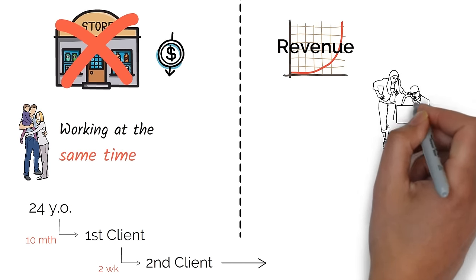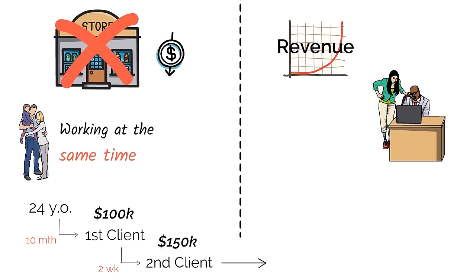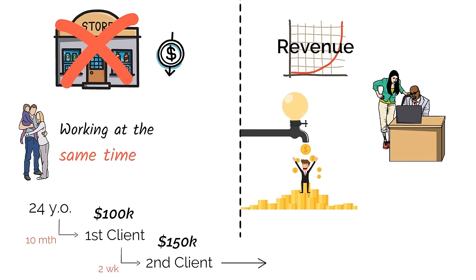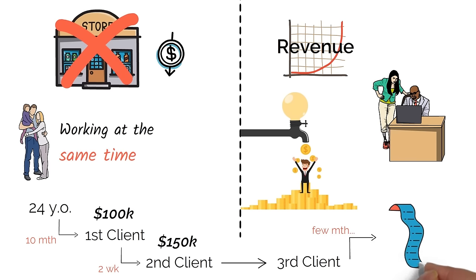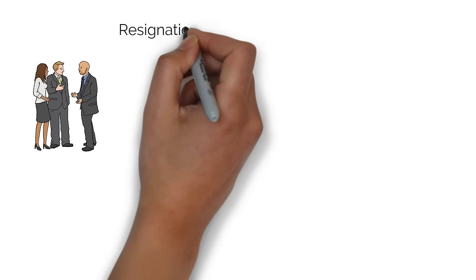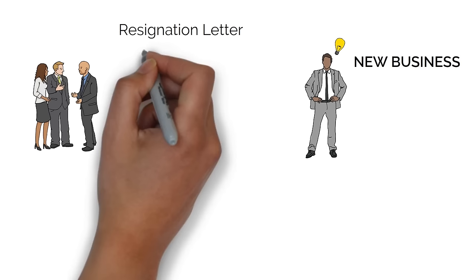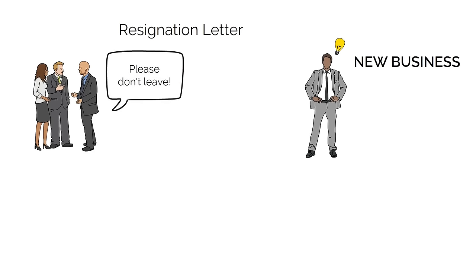These were significant amounts of revenue. Each client was north of $100,000-$150,000 of consulting. Big chunks of money coming in. Once I had the third client and I could see that for the next few months we would be cash flow positive, I went in to resign to my boss and his boss. I explained that I've started my own business and it seems to be taking off and now I'm going to go do my business. So they tried very hard for me not to leave.